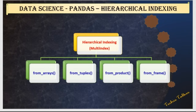Hierarchical indexing or multi-indexing can be created in many ways: using a list of arrays by using the from_arrays method, from an array of tuples, from a cross set of iterables, or from a data frame. Let me explain each one by one with an example.